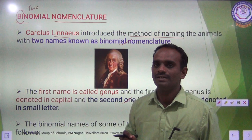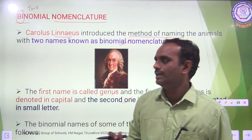The first name, Genus, should always start with a capital letter, and the Species — the second one — starts with a small letter.